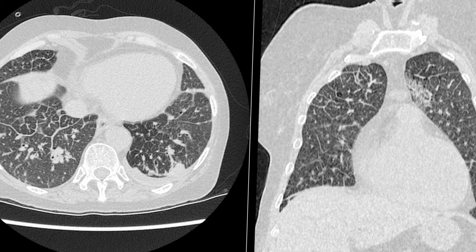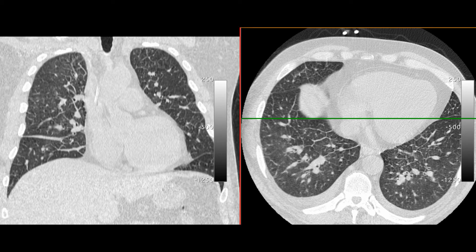Sometimes you can diagnose heart failure on a CT. This patient has a left pleural effusion with thickened interlobular septa, due to engorged fluid of pulmonary venous hypertension or heart failure. Here is another case — this patient has fluid in the horizontal fissure, bilateral pleural effusions, and interlobular septal thickening, which is due to fluid in the interlobular septum caused by pulmonary venous hypertension. This patient has heart failure.